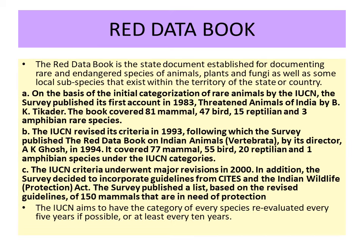The Red Data Book is a state document established for documenting rare and endangered species of animals, plants, fungi, as well as local subspecies within a territory or country. In India, in 1983, Tikader first categorized rare animals, covering 81 mammals, 47 birds, 15 reptilians, and 3 amphibians as rare species. It was revised in 1993 by Mr. Ghosh, who enlisted 77 mammals, 55 birds, 20 reptilians, and 1 amphibian. A further revision in 2000 enlisted 150 mammals categorized as endangered.